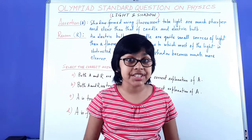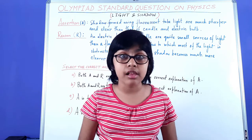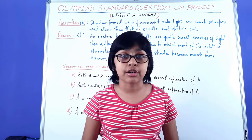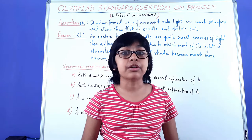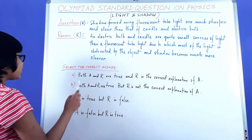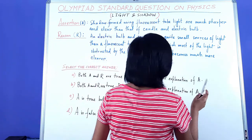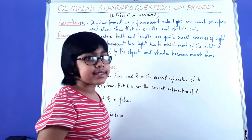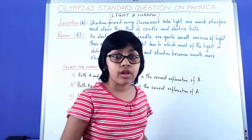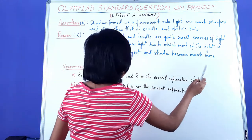Now we can move on to understanding how to analyze the correct option. There will be a few possibilities based on the statements given, and you have to choose the correct one. First: both A and R are true, and R is the correct explanation of A — meaning the assertion and reason are correct, and R has a complete relation with A.